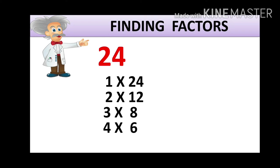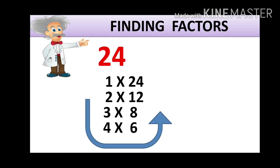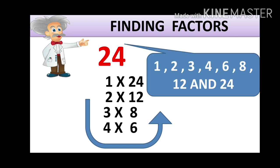So 1 multiplied by 24: 1 group of 24 or 24 groups of 1. 2 groups of 12 or 12 groups of 2. Like that, 3 groups of 8 or 8 groups of 3. 4 groups of 6 or 6 groups of 4. So this says that 1, 2, 3, 4, 6, 8, 12, 24 are all the factors of 24.